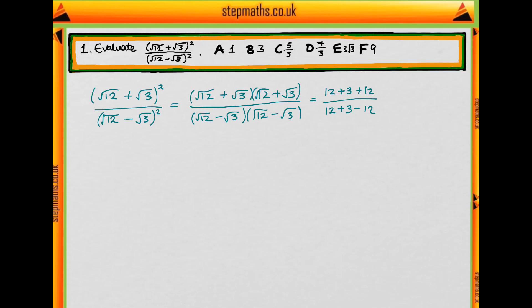We do the same thing on the bottom, where we just do exactly the same thing, except that we have negatives here. We get this, which simplifies down to 9.